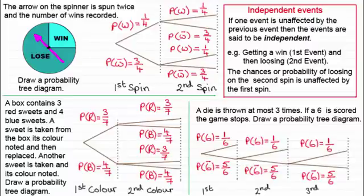And that would be our tree diagram for something like that. Again we're dealing with independent events — the probability of throwing a six the second time is unaffected by what went before, and the same applies for the third throw. Hopefully this has given you an idea of how to lay out these tree diagrams and the notation we use when writing probabilities for independent events. Thanks for listening, and hopefully if you've got any problems, I'll see you again in another video.